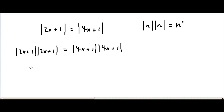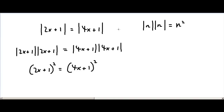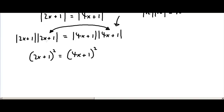So from here we get: 2x plus 1 squared equals 4x plus 1 squared. You have to remember the absolute value of 2x plus 1 equals the absolute value of 4x plus 1 — this is why I was able to multiply the absolute value of 4x plus 1 by itself, because these two values are exactly the same. So from here we have 2x plus 1 squared equals 4x plus 1 squared.